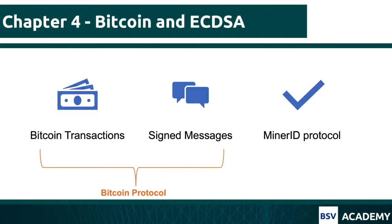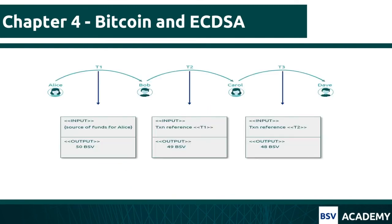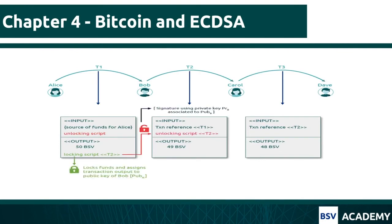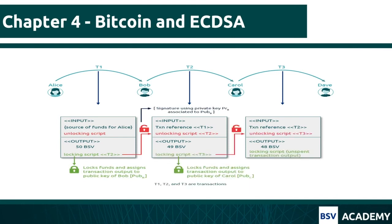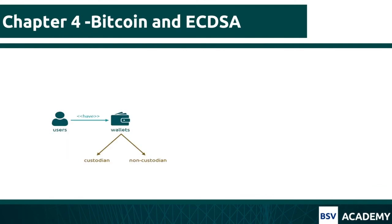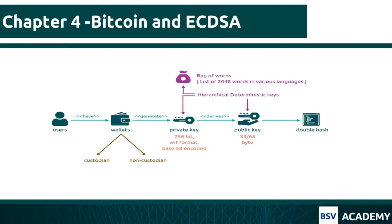Once we have understood what digital signatures are and specifically what ECDSA is, we look at where ECDSA is used in Bitcoin in chapter 4. Bitcoin protocol uses ECDSA for Bitcoin transactions and signed messages. We will also look at miner ID protocol, which is an optional feature and illustrates just another application of ECDSA. The most critical key takeaway within these three topics would be Bitcoin transactions, as transactions are at the heart of Bitcoin protocol. In chapter 4, we will take a simple example of a Bitcoin transaction for transferring BSV from Alice to Bob to Charlie then Dave, and understand how gracefully digital signatures have been applied to provide security for transfer of value. We also look at how private public key pairs are typically generated in a Bitcoin ecosystem, and close chapter 4 with the usage of ECDSA in signed messages and miner ID protocol.